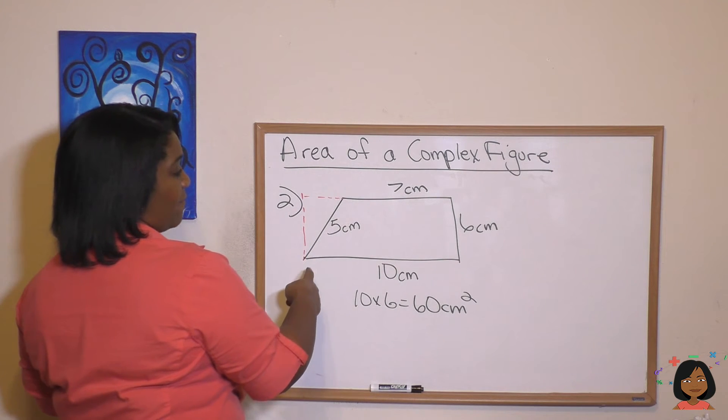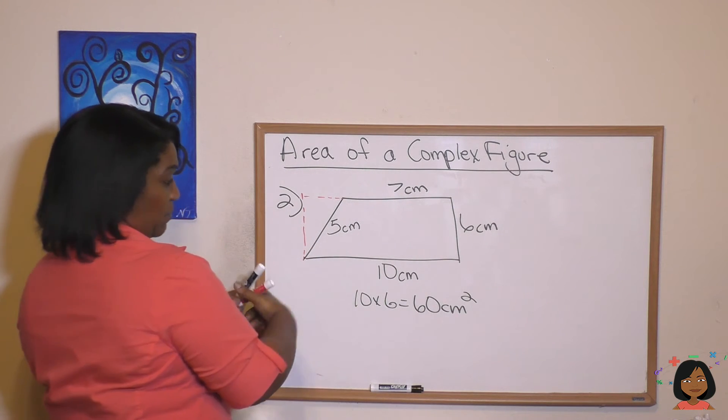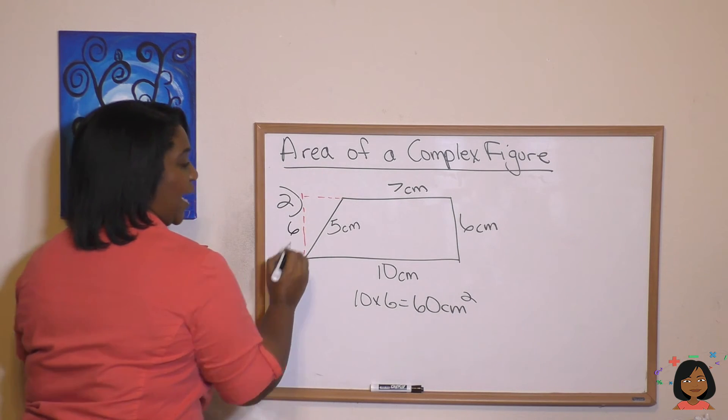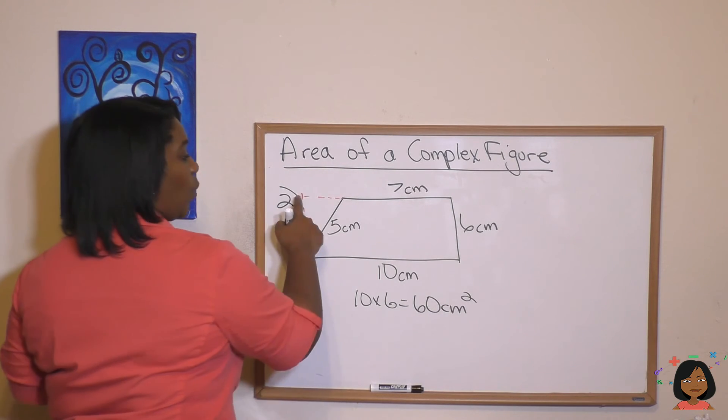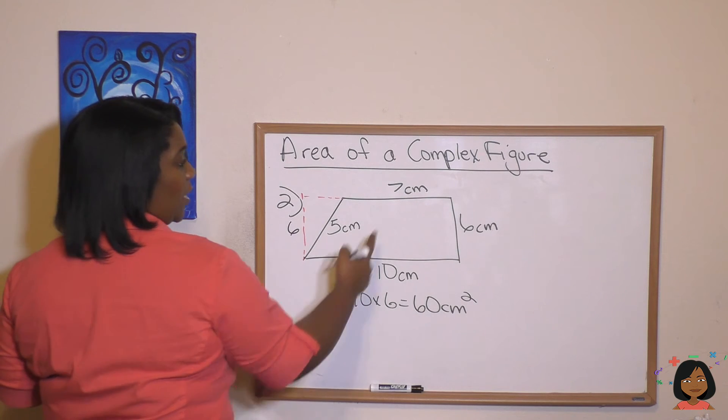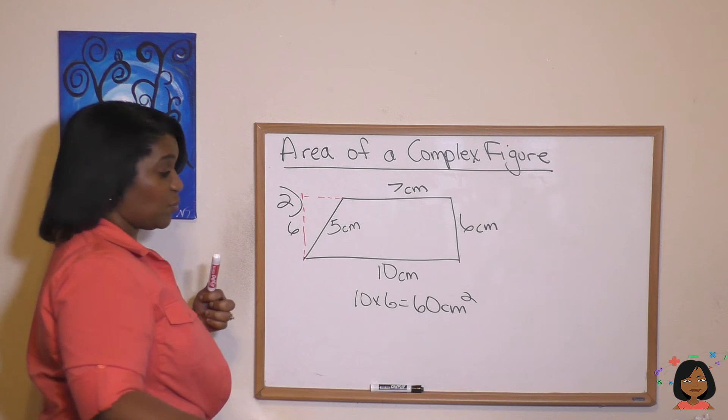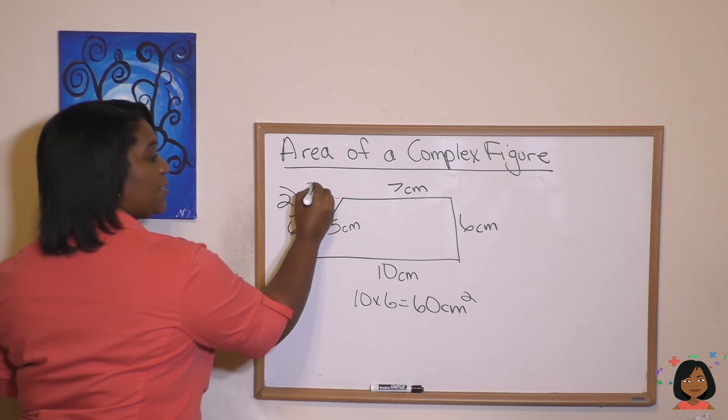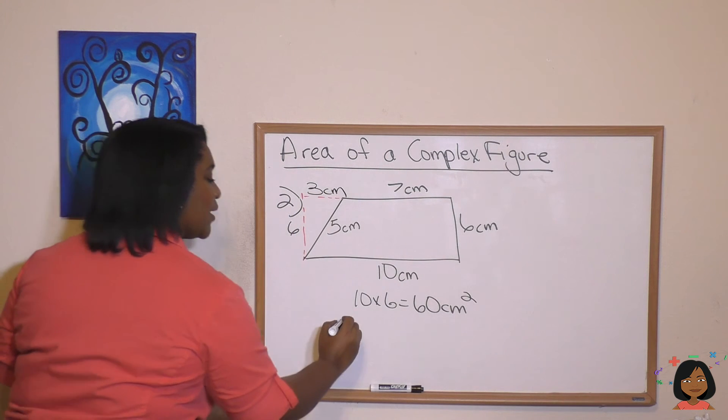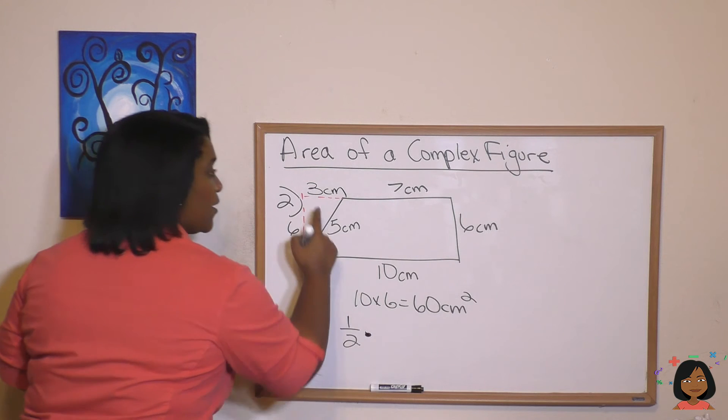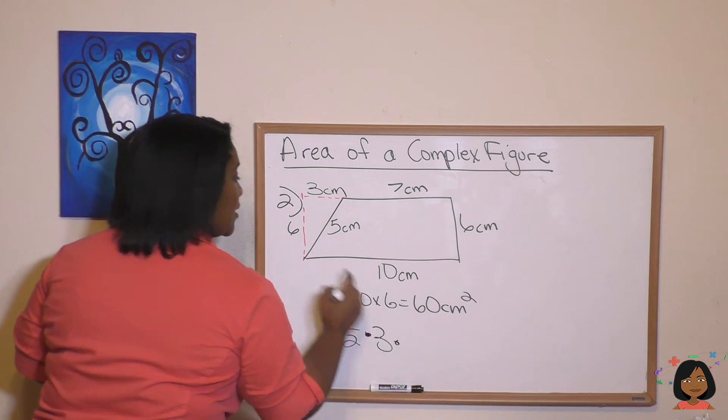We have that this side we know was going to be a 6 because this is a 6. So we can put that in for our height. And what about our base? Well, if this piece is 7 and this piece is 10, the difference between the two is 3 centimeters. So let's add that in.